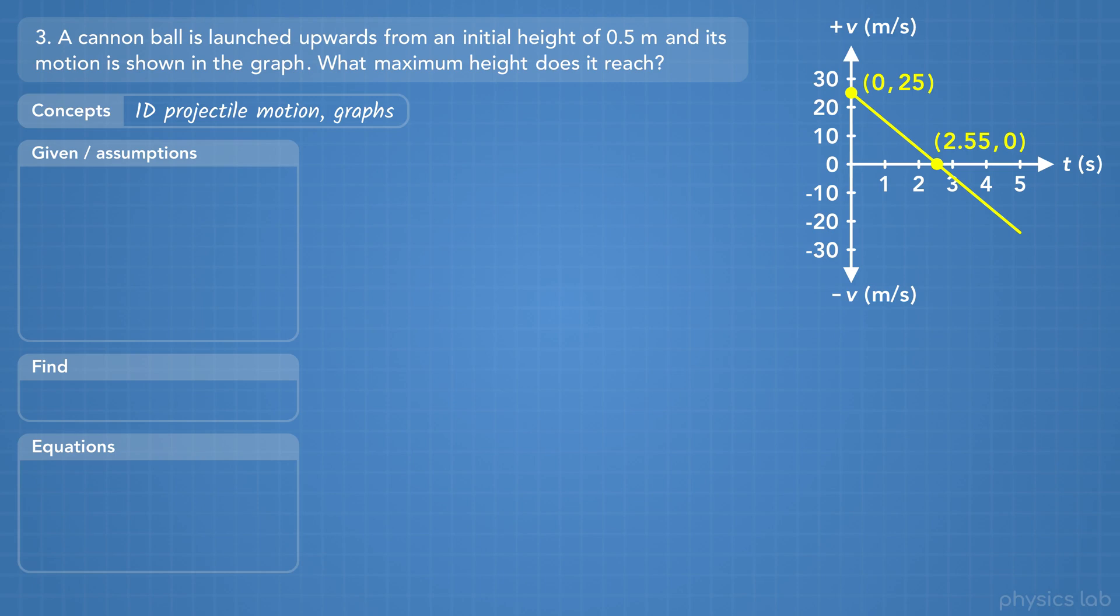Okay, so this problem involves a motion graph. Let's figure out what we're looking at. The horizontal axis is time in seconds, and the vertical axis is velocity in meters per second. So we have a graph of the ball's velocity over time, and the graph is giving us the coordinates, or values, for two specific points.